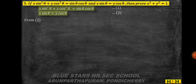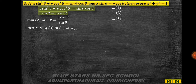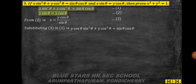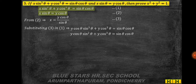From equation 2, x = y·cosθ / sinθ (equation 3). Substituting equation 3 into equation 1: (y·cosθ/sinθ)·sin³θ + y·cos³θ = sinθ·cosθ, which gives y·cosθ·sin²θ + y·cos³θ = sinθ·cosθ.